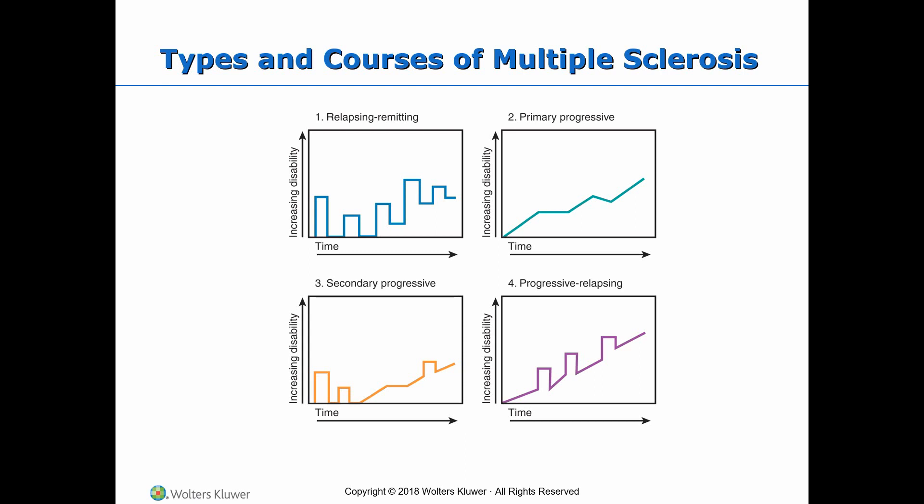Primary progressive MS is characterized by disease showing progression of disability from the onset, without plateaus, and with only temporary minor improvements.